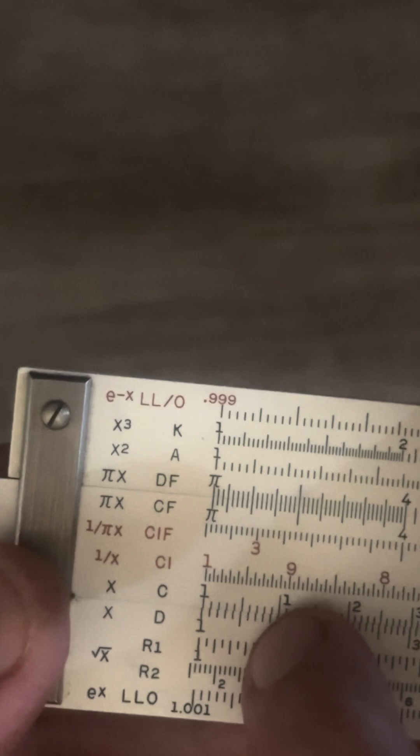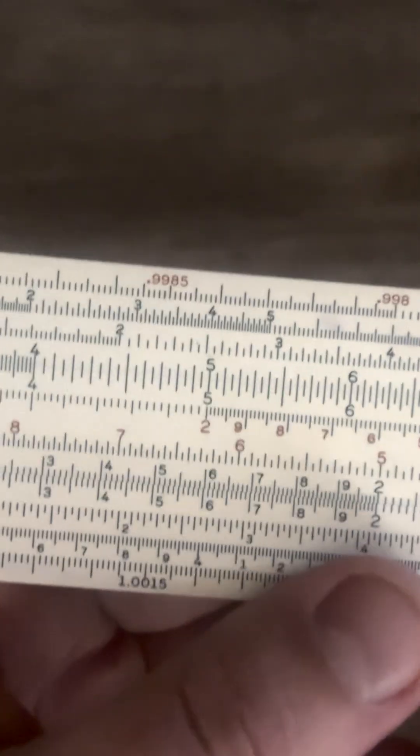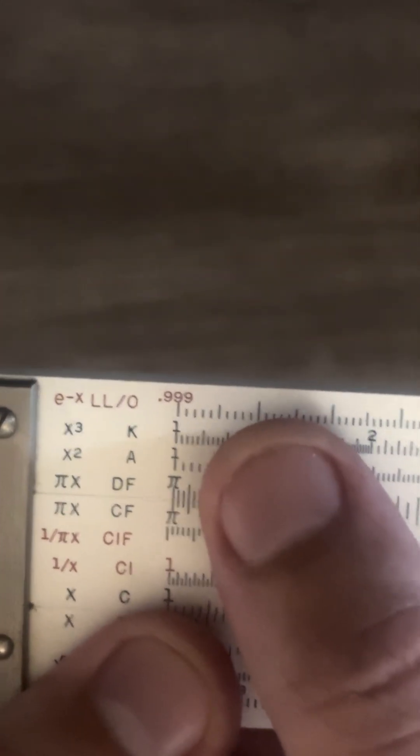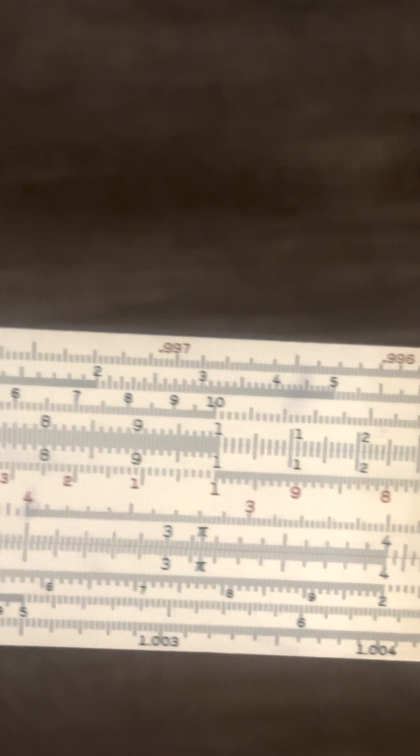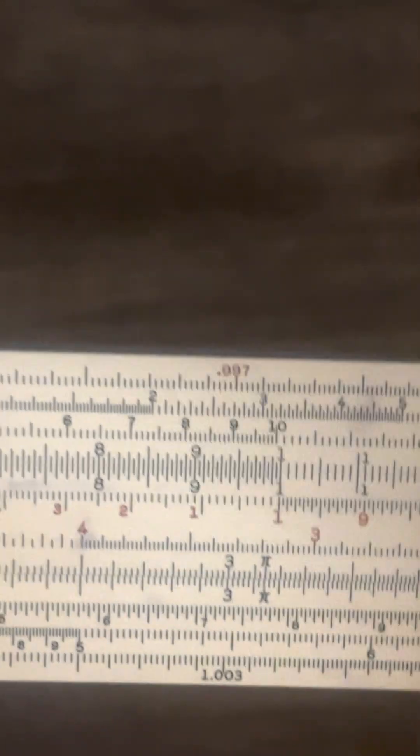Now what do we mean when we say folded? Well if you notice they start at pi. So essentially they are taking pi on the C and D scales and they're shifting it over so that it's at zero essentially. But going down the line you see that it runs exactly the same way as the C and D scales.